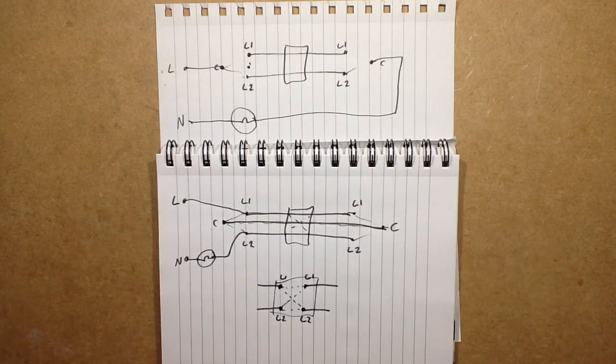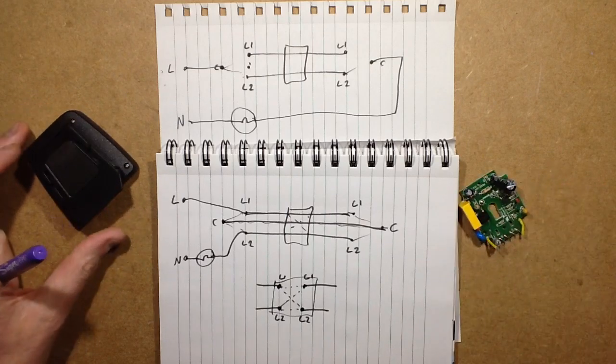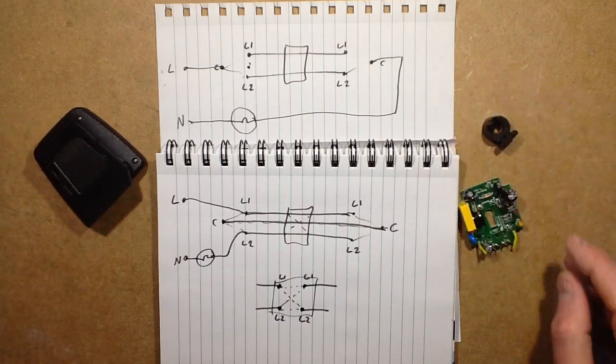But yep, that's the gist of it. So I think that pretty much wraps up. We've covered the torch, covered the RCD and its little fancy double coil. Yep, I think that will do for the moment.